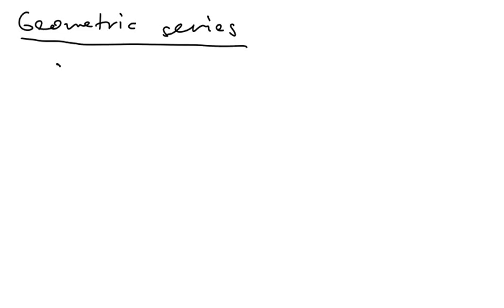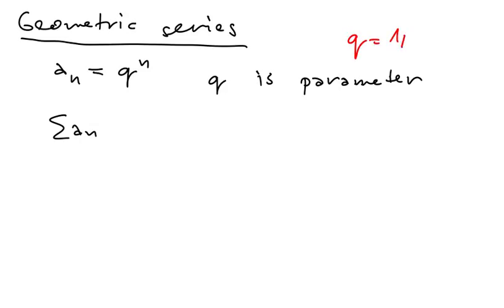So we consider a series such that aₙ is q to the power n. So q is this parameter and we will consider this series sum of aₙ. So in the previous example we considered q equals one half and then we discussed why it converges.